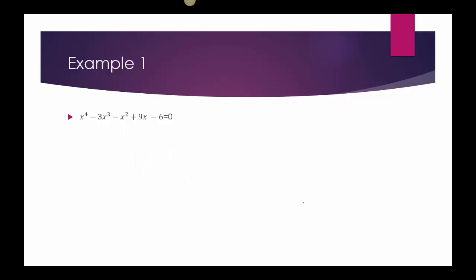Let's go on to the rational root theorem, which says we should look at the last term, my 6, and list all of the possible factors. Then look at our first term and list all of those factors. So my last term was 6, so I have plus or minus 1, plus or minus 2, plus or minus 3, plus or minus 6. The q being just 1 means I only have plus or minus 1. Putting those together, I have p over q — my possible rationals — as plus or minus 1, plus or minus 2, plus or minus 3, plus or minus 6.